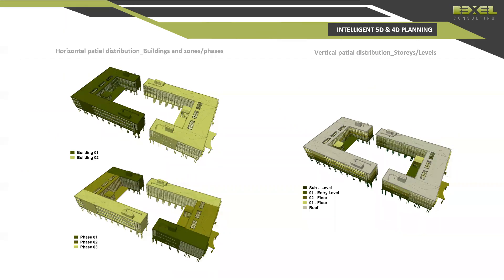For horizontal spatial distribution, you can divide your project into buildings, or larger project elements like blocks, and then divide every building into zones or phases — because executing a whole floor at once would require a huge amount of workers and equipment. By separating each floor into smaller zones, you can work with a limited number of resources and repeat that process each week, optimizing resource use. For vertical distribution, it simply relies on building stories or levels.